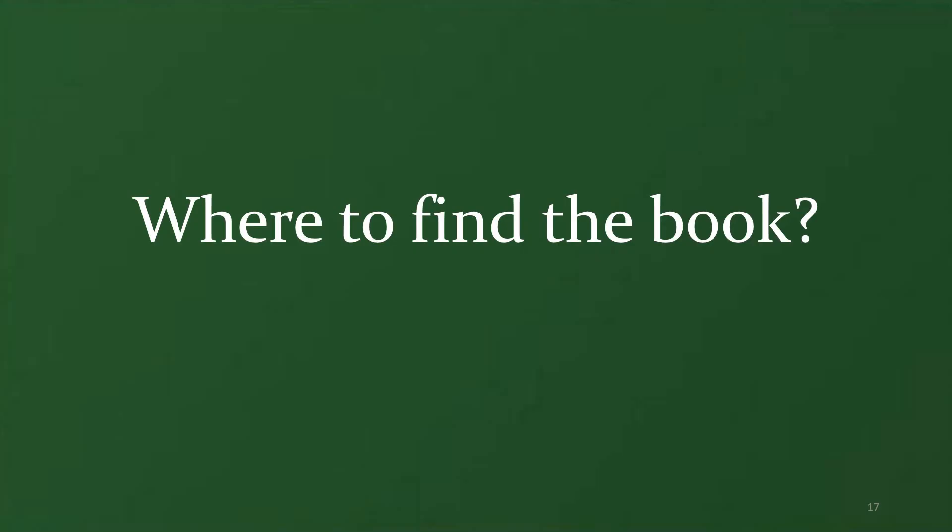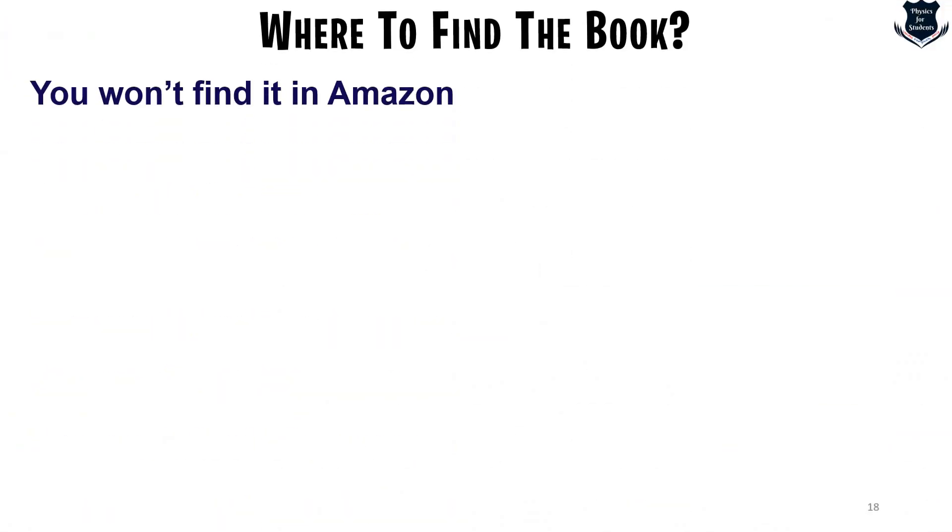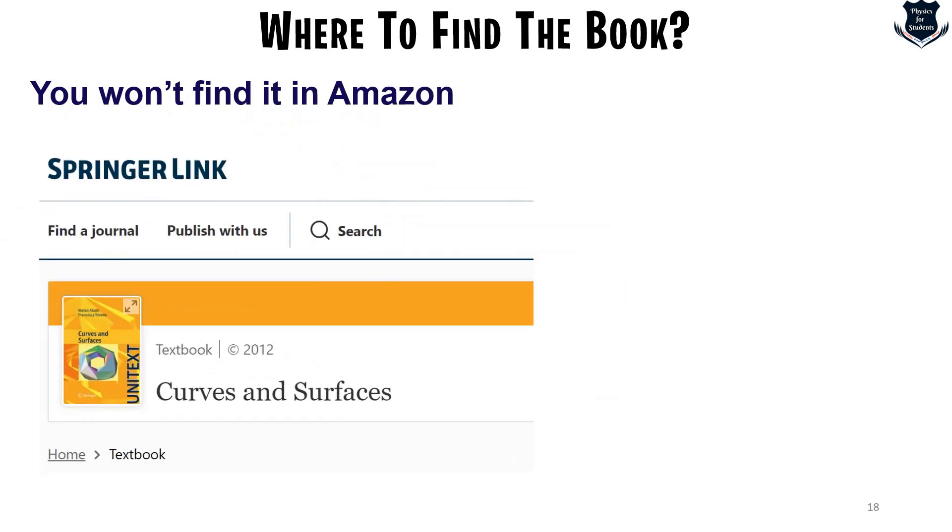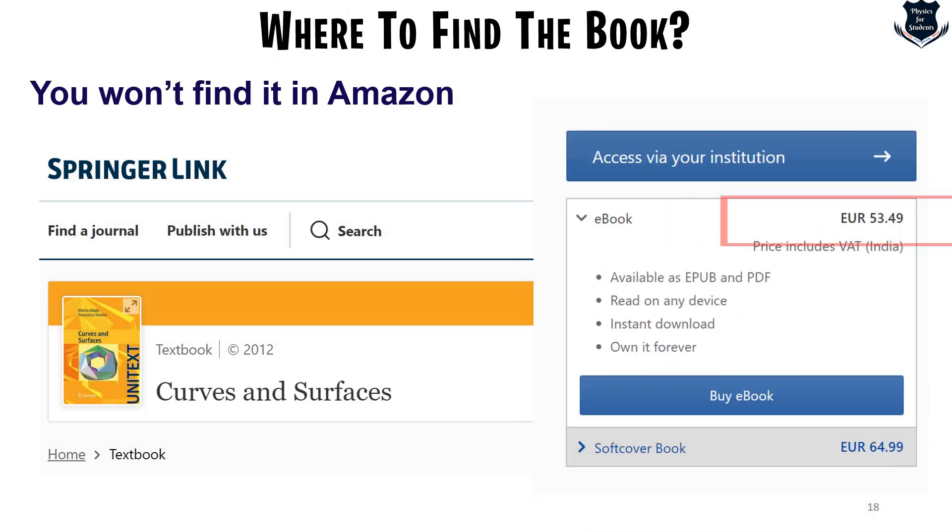Okay now the question is where you will find this book. I have done an extensive search. You won't find it on Amazon. Only place to find it is directly to the Springer link website and you get the book Curves and Surfaces and to your utter surprise this is quite costly 53.49 euro I mean to say it's quite a costly book but don't worry I will be giving you this book I will just tell you how at the end of this video.